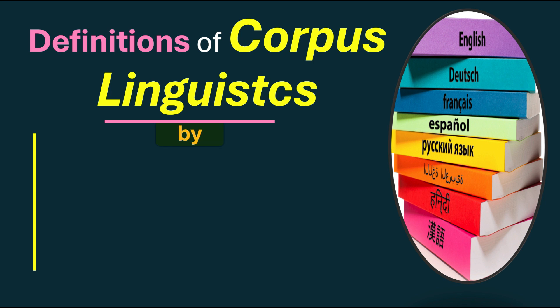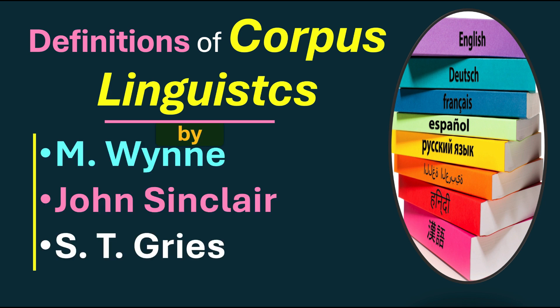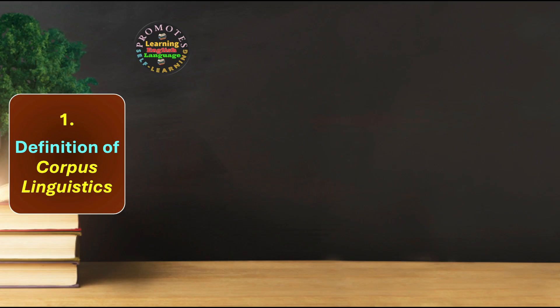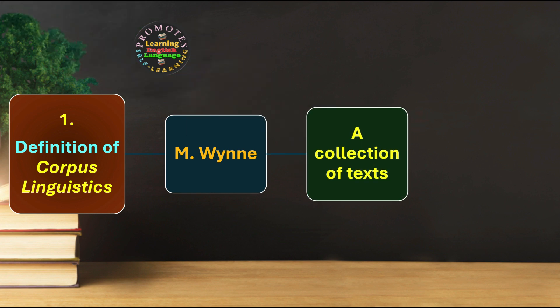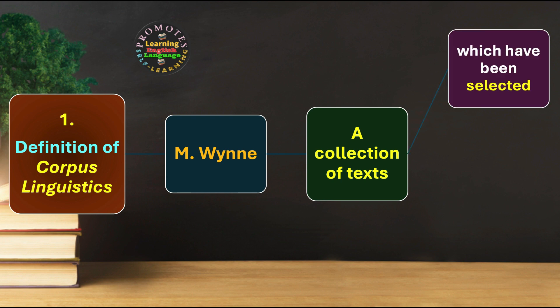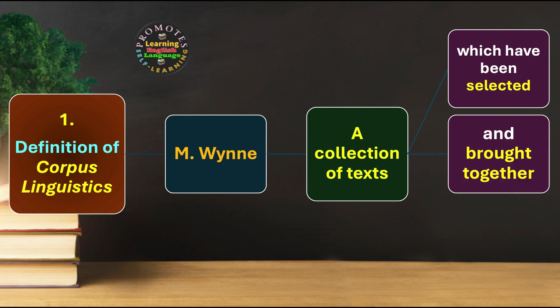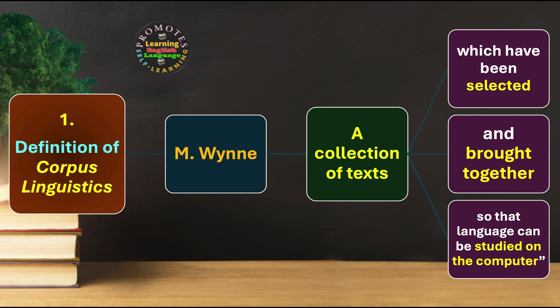Definitions of corpus linguistics by M. Wayne, John Sinclair, and S.T. Grace. Definition number 1 by M. Wayne: corpus linguistics is a collection of texts — a group of texts which have been selected. Two key points: you have a collection of texts, and those texts must be selected with criteria to be chosen and brought together so that language can be studied on the computer.